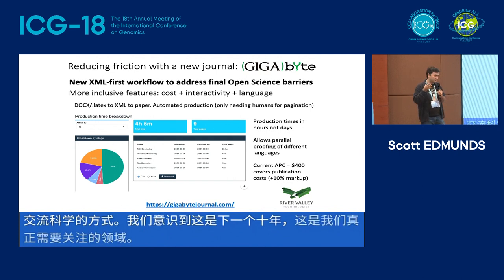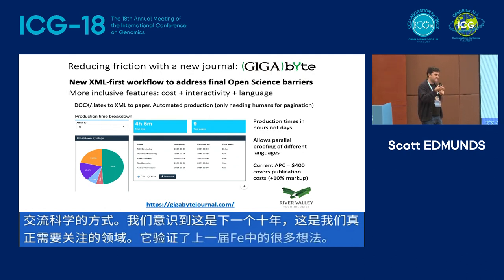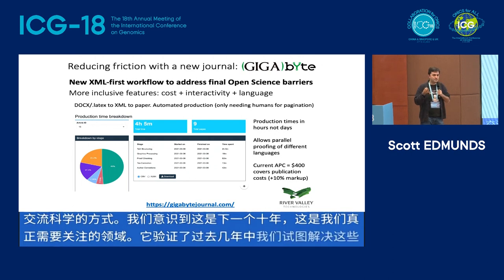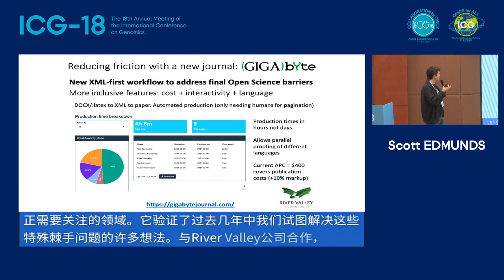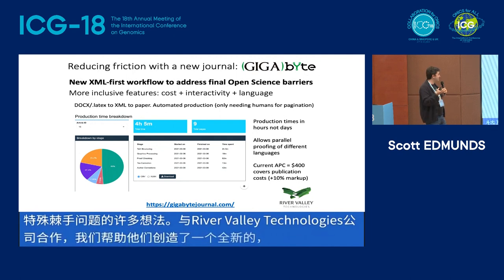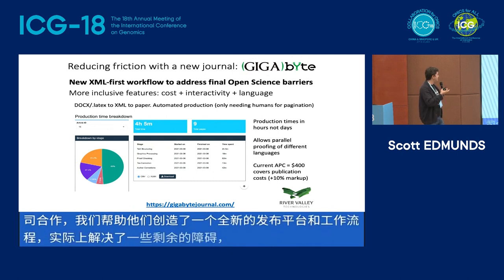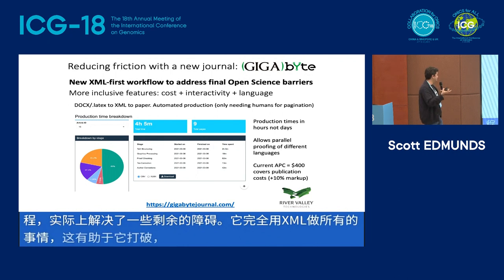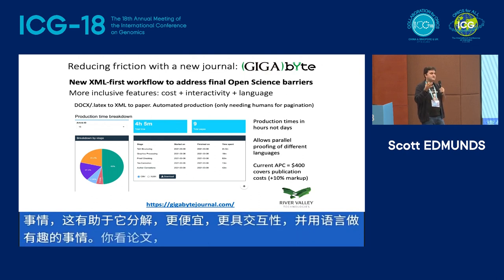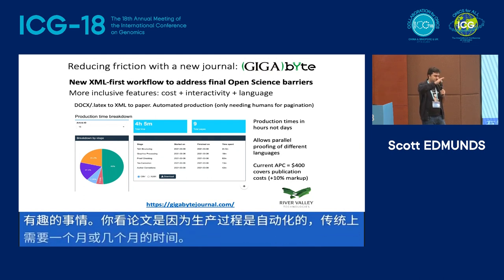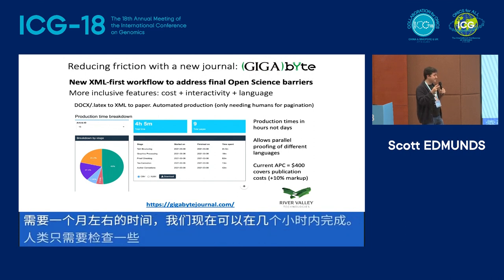This validated a lot of our thinking over the last few years — we've tried to address these tricky issues through technology, by launching a new publishing workflow with the company River Valley Technologies. We helped them create a completely new publishing platform and workflow that addresses some of these remaining barriers. It does everything purely in XML, making it much cheaper, more interactive, and better with language. Because the production process is automated, something that traditionally takes a month can now be done in hours, reducing the cost. It allows parallel proofing in different languages and also interactivity.